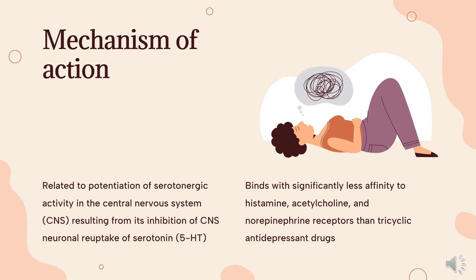Escitalopram, along with paroxetine, is also considered an allosteric serotonin reuptake inhibitor. It binds to a secondary allosteric site on the SERT molecule to more strongly inhibit 5-HT reuptake. Its combination of orthosteric and allosteric activity on SERT allows for greater cellular 5-HT levels, a faster onset of action, and greater efficacy compared to other SSRIs.